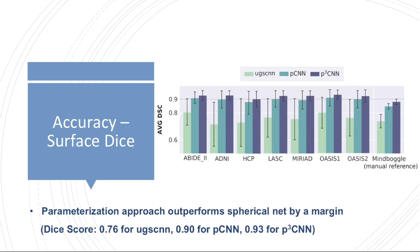The segmentation accuracy of the UGS CNN, the parameter space CNN, and the view aggregation approach are then compared by computing the surface-based Dice similarity coefficient in the subject space on the original brain surface — both with respect to FreeSurfer on seven different datasets and with respect to a manual reference.